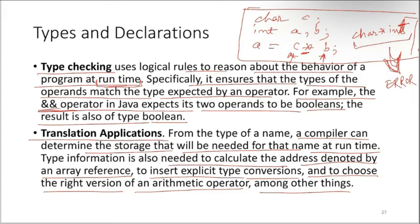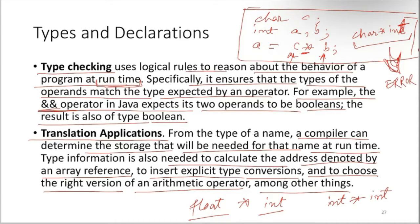In Java, because of polymorphism, the same arithmetic operation can do different kinds of work. Even a simple multiplication between a float and an int is allowed, but the algorithm for multiplying float * int is different from int * int. So there are different versions of the multiplication operation.